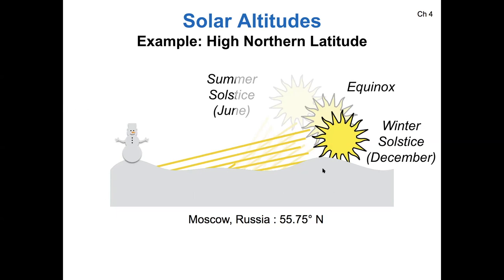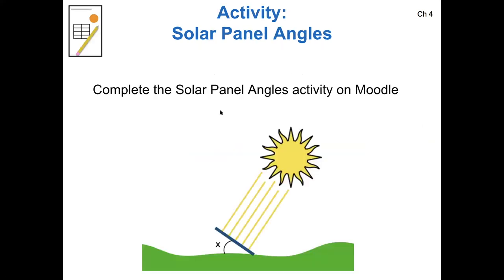If I was going to build a solar installation in Moscow versus Kasumu, Kenya, I would probably want to install them at different angles. I would want to install my solar panels so that they point perpendicular to the sunlight that's coming in. In our solar panel angle activity, this is exactly what you're going to do. You're going to decide what panel angle to install your solar panels at different locations on the earth at different times of year.